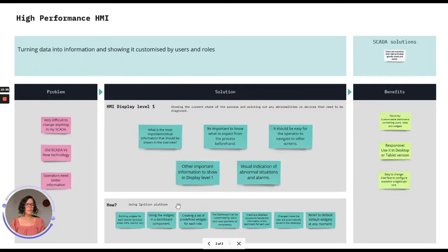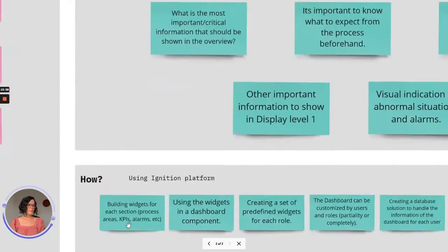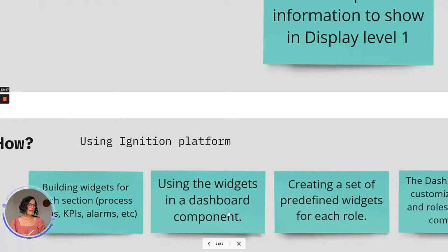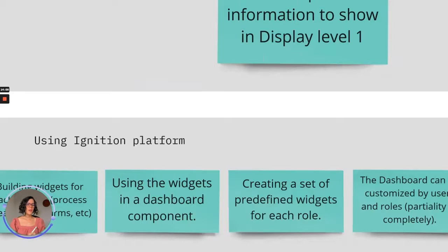So how do we do it using the Ignition Platform? First, we build widgets for each of the tiles — widgets for process areas, KPIs, and alarms — and we have these shown in a dashboard component. So we have the flexibility to turn widgets on and off, and also to move them or organize them on the screen as we want.